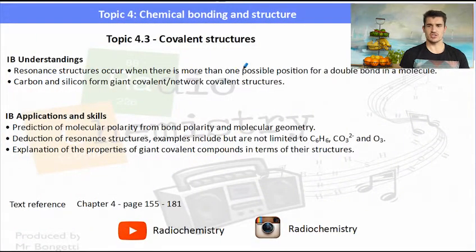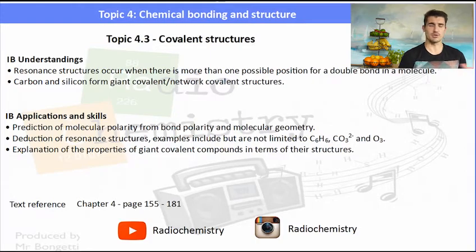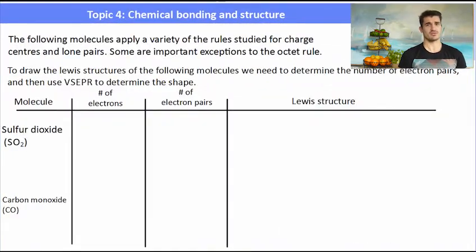IB understandings and applications include resonance structures, giant networking and covalent layer lattices, predicting few polarities from their geometries, and building on Lewis structures from the last video.